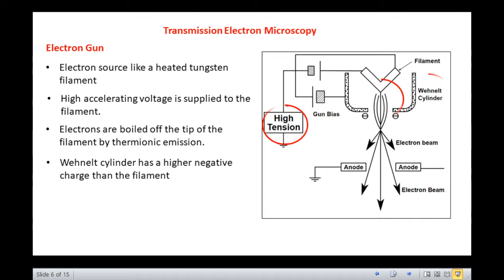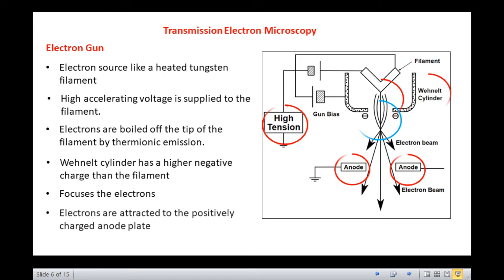Electrons are boiled off the tip of the filament by thermionic emission. It helps focus the electrons. Electrons are attracted to the positively charged anode plate.